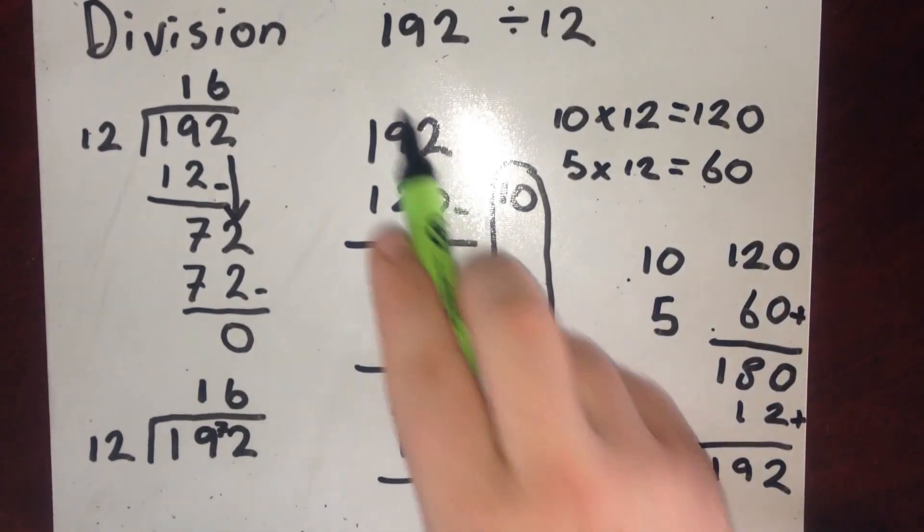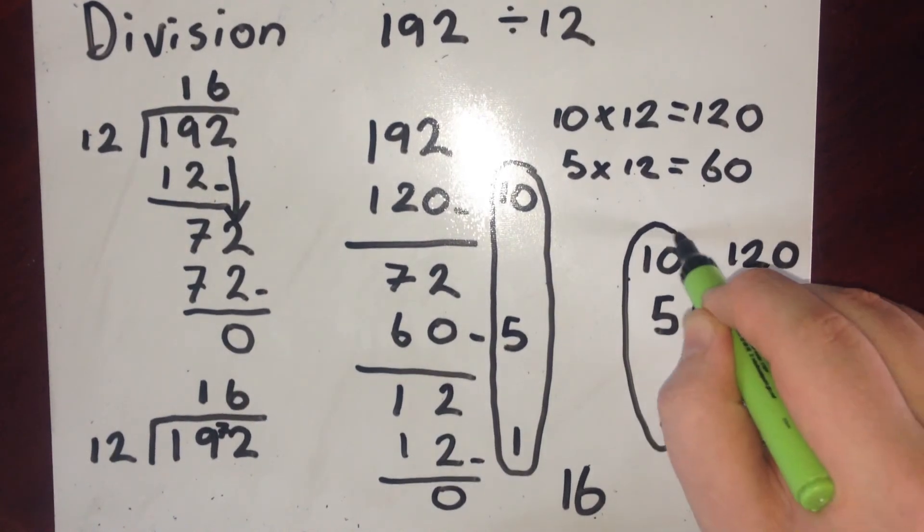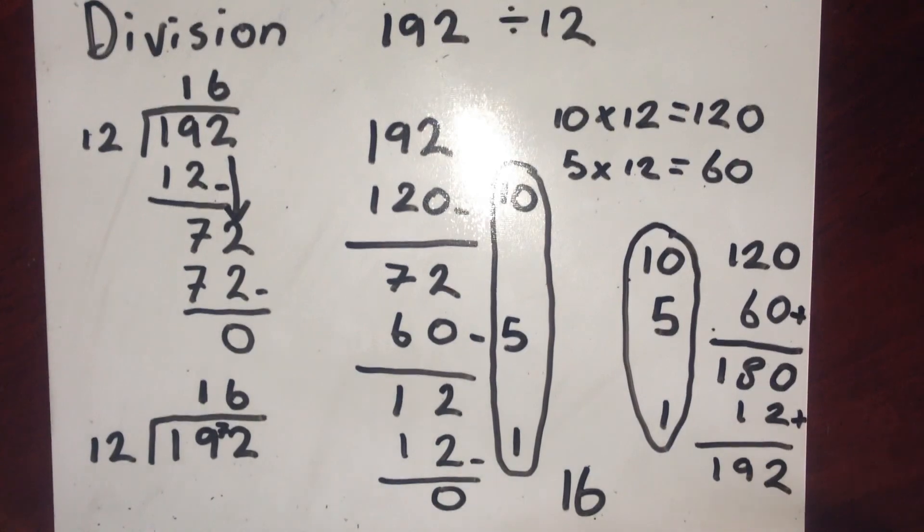Now that I've reached the answer that I want to, I can see how many lots of 12 I added together to make that. That's 10 plus 5 plus 1. So that's 16 again.